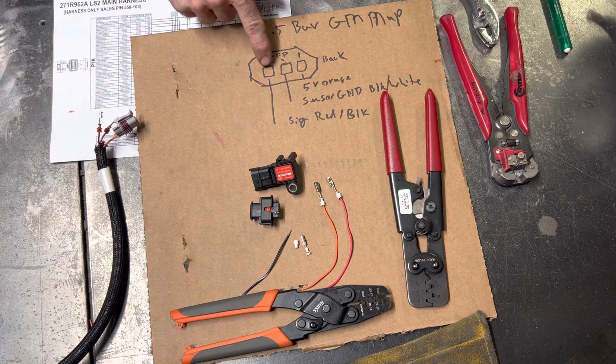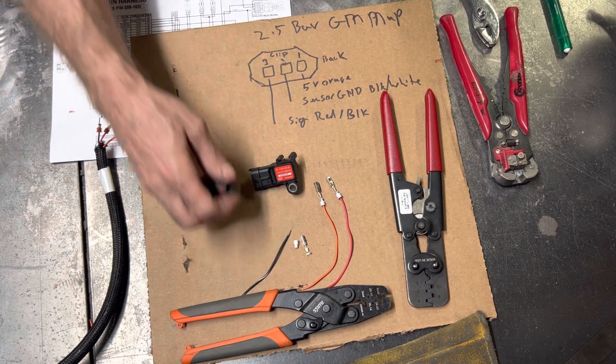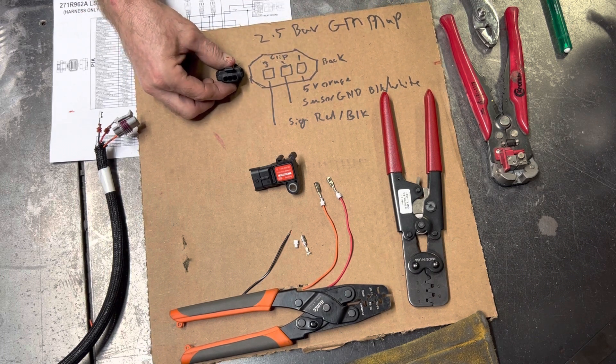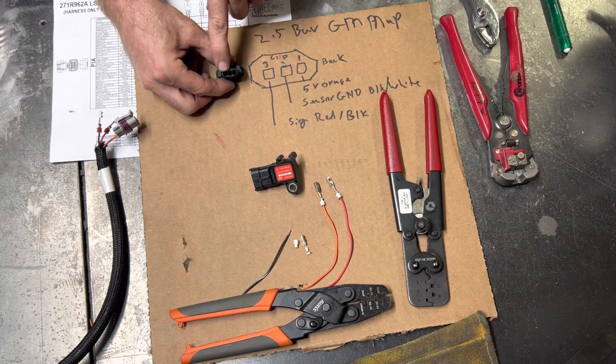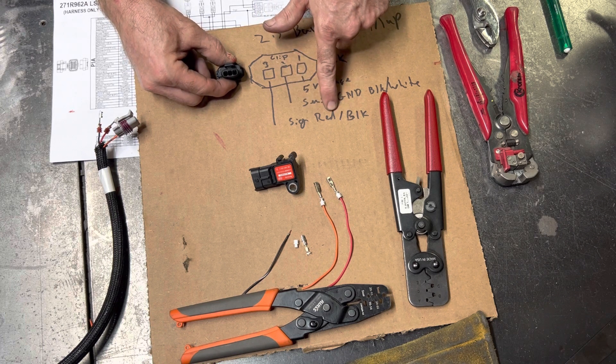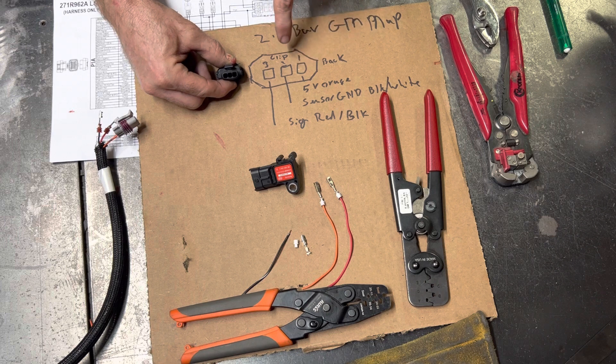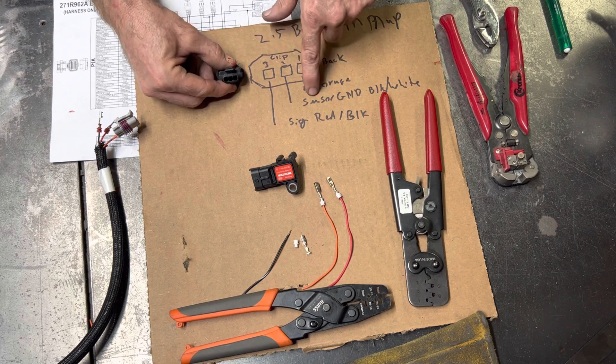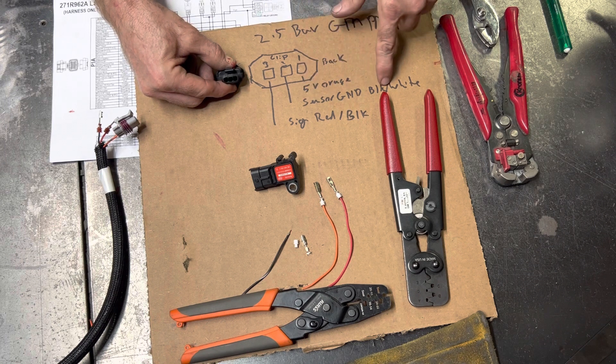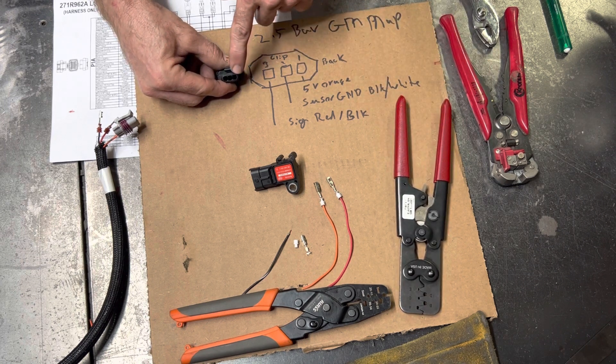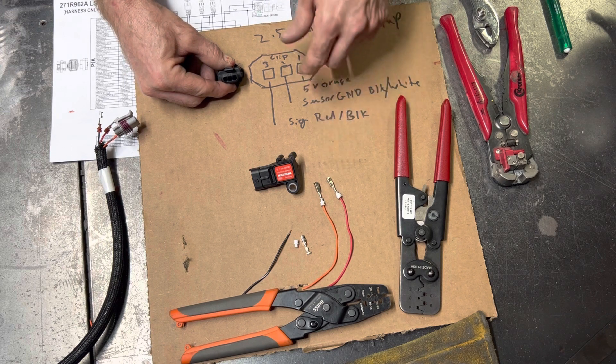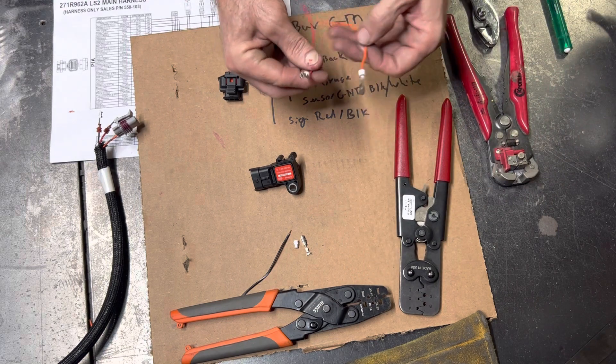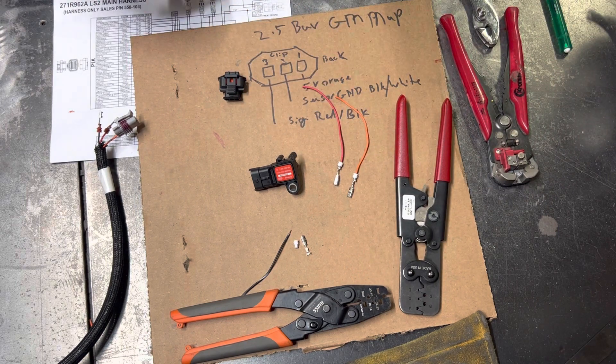Right over here somewhere is our MAP sensor, and it tells us what all these are. We have a sensor ground, a five-volt power, and the signal. Our signal goes into number three - you're looking at it with the clippy guy up and facing the back - which is red and black. Our ground is two, which is black and white. Pin number one is going to be our five-volt, which is orange. I already pinned these guys because I've done this video once and messed up.